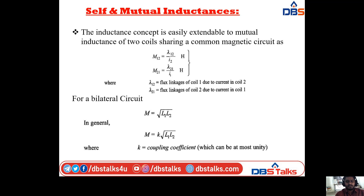The inductance concept is easily extendable to mutual inductance — the inductance of two coils sharing a common magnetic circuit. M12 = δ12/I2 Henrys, and M21 = δ21/I1 Henrys, where δ12 is the flux linkage of coil 1 due to current in coil 2, and δ21 is the flux linkage of coil 2 due to current in coil 1. For a bilateral circuit, M = √(L1·L2), and in general M = K√(L1·L2), where K is the coupling coefficient.